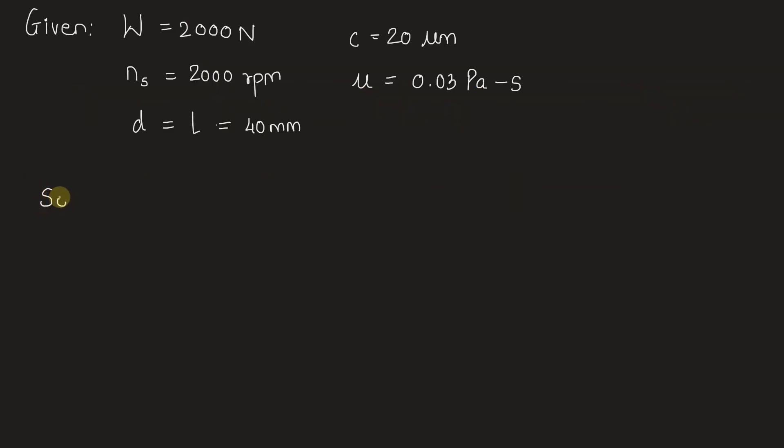it is found out. The Sommerfeld number of bearing is given as S equals (r/c)² times μ times Ns divided by P, where P is unit bearing pressure. All these terms are already known to us except unit bearing pressure, which we can find out from the load given, so